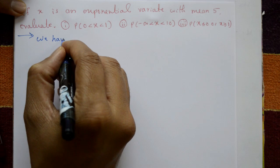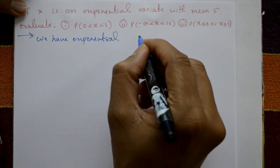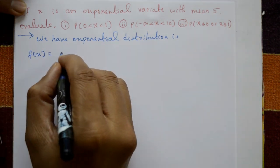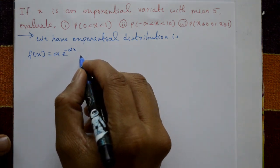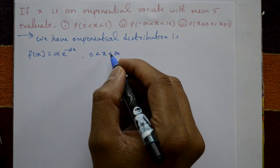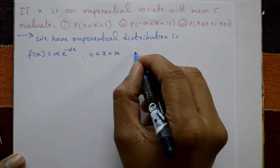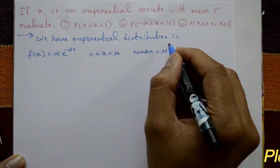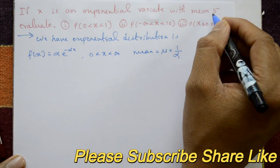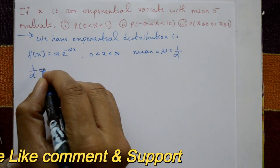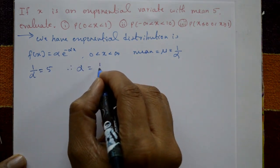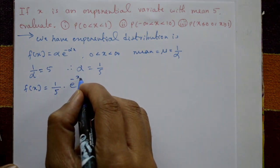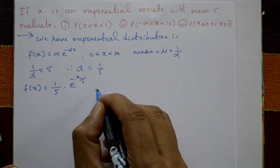The exponential distribution is f(x) = alpha times e raised to minus alpha x, for range 0 less than x less than infinity. In this problem, mean is given as 5. Since mean mu equals 1 by alpha in exponential distribution, we have 1 by alpha equals 5, so alpha equals 1 by 5.